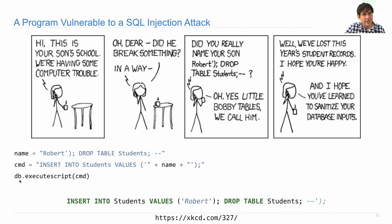In Python, execute, which we saw before, only takes one statement at a time. But there is an executescript method that takes a string with as many statements as you'd like and executes them all. So this code would run and it would in fact drop the table of students, and that's bad.